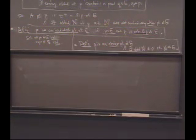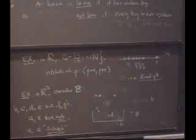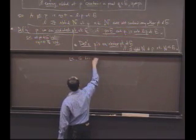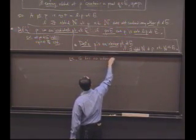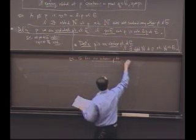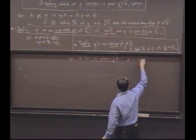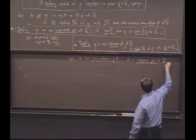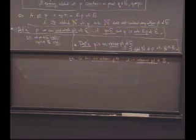All right. Excellent. Let's see. Are there any interior points of G? So, example G has no interior points. D is an interior point of B. And there are others. That's the example.